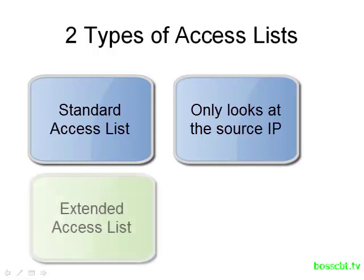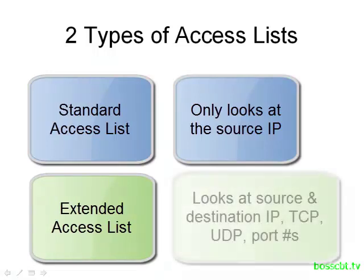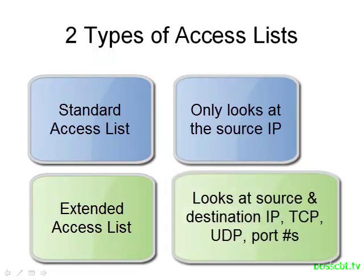The second type is known as the Extended Access List, and this one is a bit more complicated and complex. An Extended Access List considers more IP packet information when matching traffic. Not only the destination IP address and the source IP address, but port numbers, transport protocols like TCP and UDP, and other factors can all be examined to match traffic. So two types: Standard and Extended.